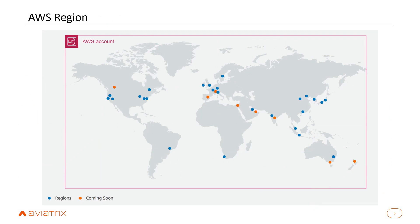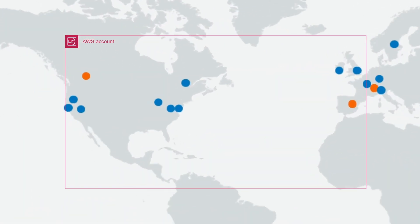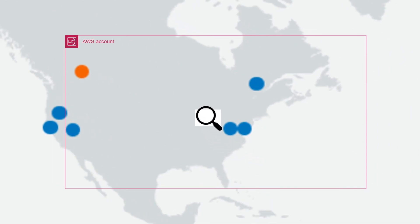From a single AWS account, you can run AWS services anywhere in the world where there is an AWS region, shown as dots on the map. An AWS region is a place where AWS has built data centers organized together. Regions are connected through the AWS global backbone, but VPCs in different regions can't automatically communicate — you must build that connectivity yourself. AWS has also designed regions to be failure-isolated from each other.